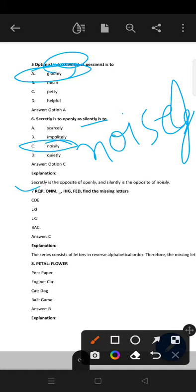Now, R, Q, P, O, N, M, I, H, G, F, E, D. Find the missing letters. So let's make it easy. Just read from here: D, E, F, G, H, I, J, K, L, M, N, O, P, Q, R. So we have to put it here: J, K, L. So option C is correct. So this series consists of letters in reverse alphabetical order.